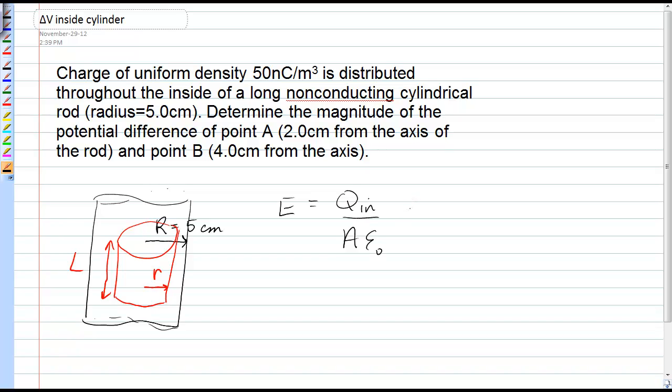Now we can see that we're given charge density, and by the units, 50 nanocoulombs per meter cubed, we can see that that's rho. So that's a volume charge density.